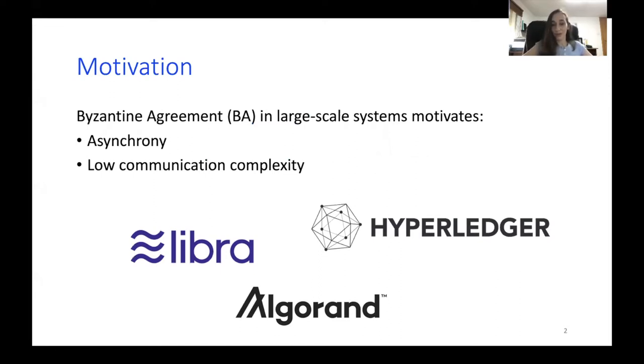From the FLP result, we know that one cannot solve Byzantine agreement deterministically in the presence of faults in an asynchronous model. We also know from lower bounds that any deterministic protocol requires quadratic message complexity. So from the two, we conclude that we must settle on randomized consensus.